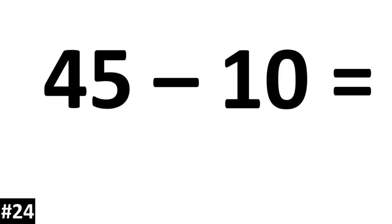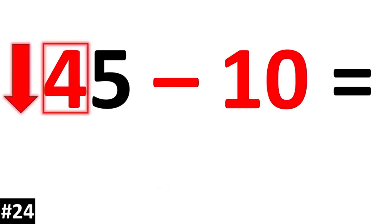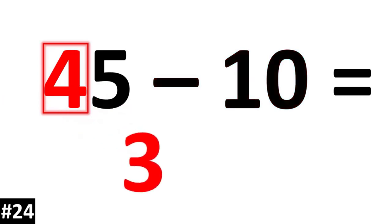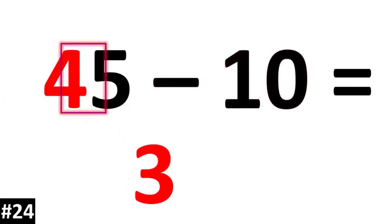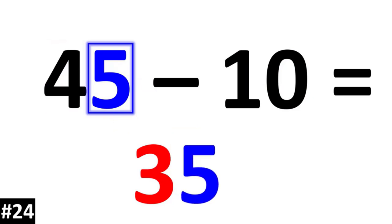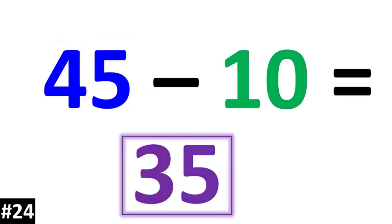45 minus 10. The 4 is going to go down to 3. The ones value stays the same, so we have 35.